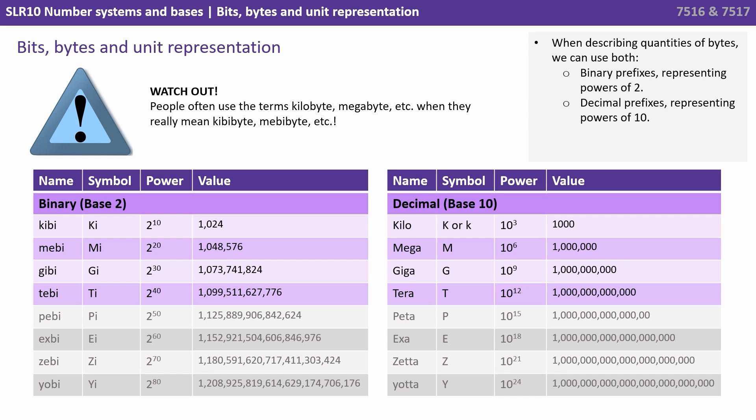A megabyte is exactly one million, and it is the decimal base ten representation. A mebibyte, on the other hand, is the base two binary representation, and it is precisely one million, forty-eight thousand, five hundred and seventy-six.